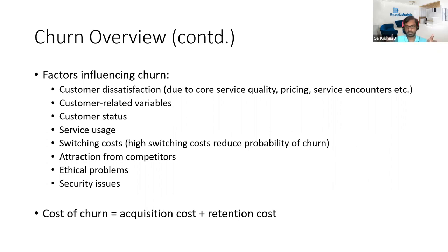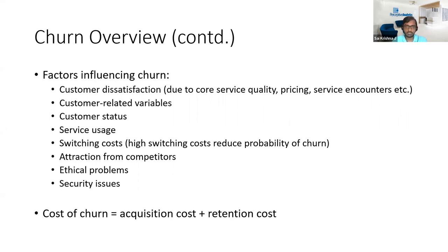If switching requires high infrastructure effort — software configurations, setup time — that is a very costly affair, so high switching costs lower churn probability. Other factors include attraction from competitors, and ethical or security issues. Companies scrutinize products to ensure they meet security and data privacy requirements. If security certificates are outdated or a certain security standard is no longer supported, that could also be a reason for churn.